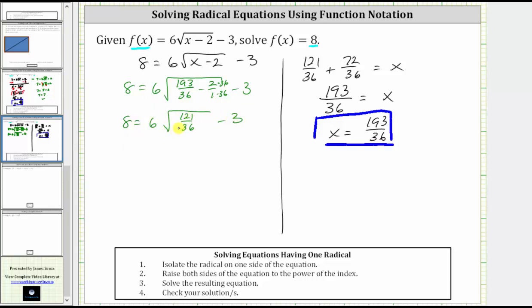And the square root of 121/36 is equal to 11/6, which gives us 8 = 6 × (11/6) - 3. Simplifying here before multiplying, there's 1/6 and 6 here and here. Notice now we just have 1 × 11. So this gives us 8 = 11 - 3. And 11 - 3 = 8, verifying the solution is correct.